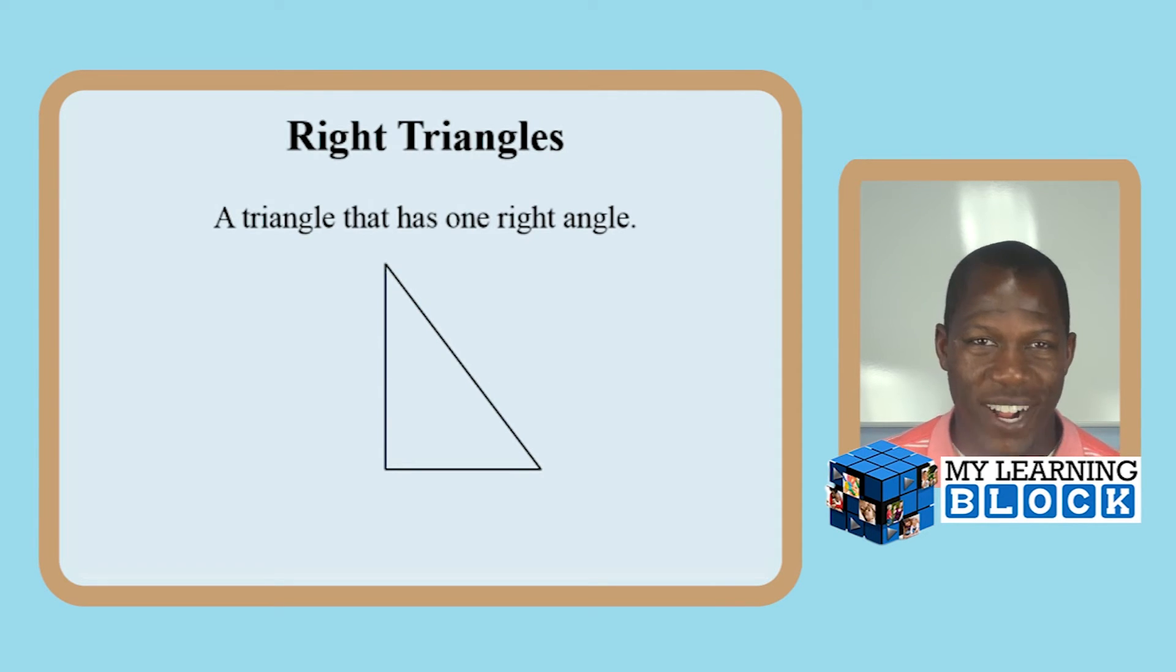Well anyway, a right triangle is a triangle that has one right angle. It will have two angles that are less than 90 degrees, but one angle will be exactly 90 degrees, and that's pretty much how you can tell if a triangle is a right triangle.